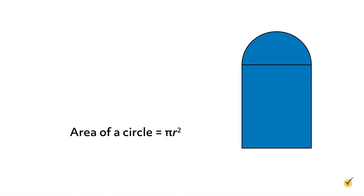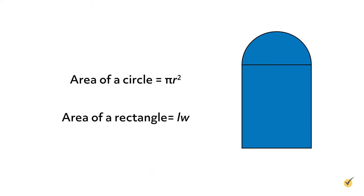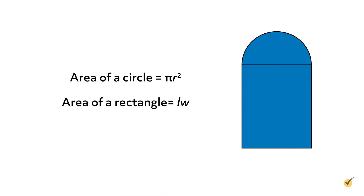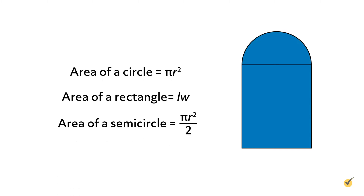But first, we need to review the formulas used to find the area of rectangles and circles. The area of a circle is pi r squared, and the area of a rectangle is length times width. In this case, we only have half of a circle, so we need to modify our circle formula a bit. Dividing by 2 will make it the area of a semicircle. So the area of a semicircle is equal to pi r squared over 2.